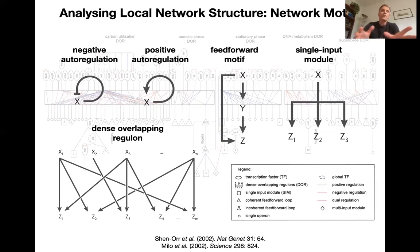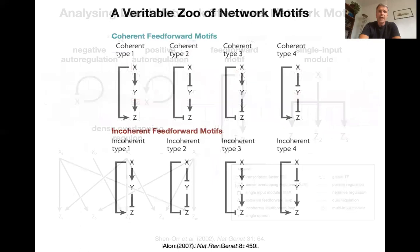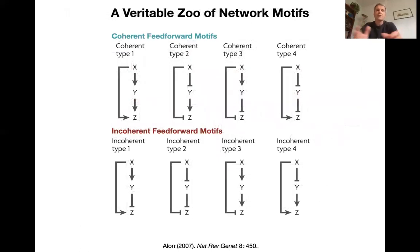There are more. And obviously, it's a little arbitrary to set up different classifications of motives. We'll encounter a few more motives as we go along. But if you actually zoom in on the feed forward motive itself, now that you have signed interactions, there's a whole zoo of network motives within the feed forward motive because every interaction could be activating or repressive.